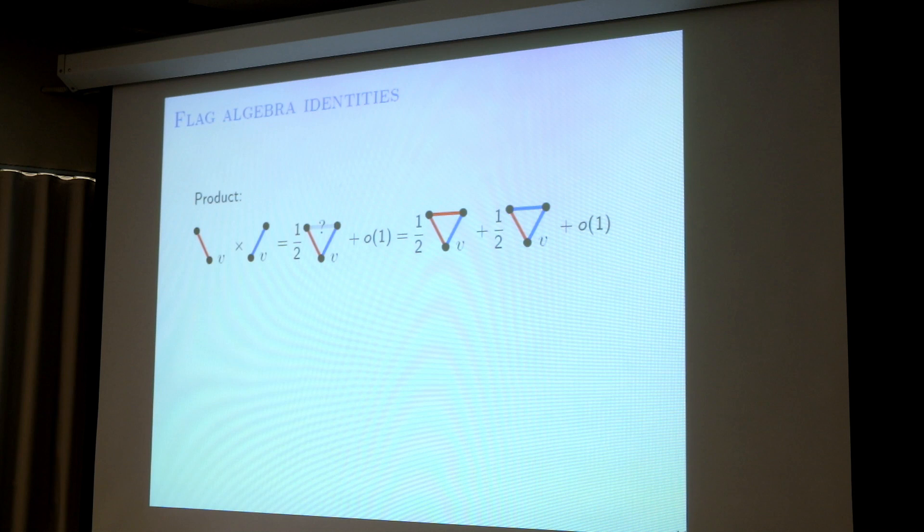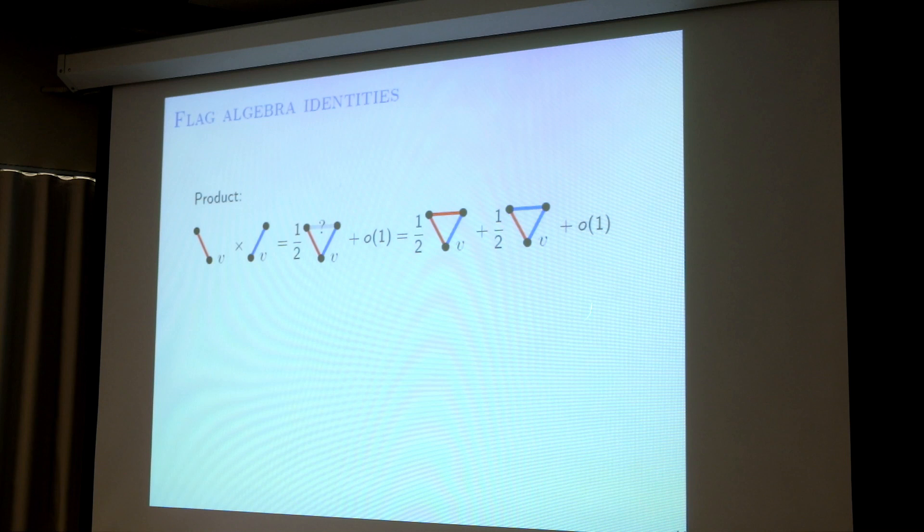Why is there a small difference? Because for example here I choose a vertex and then choose another vertex — there's a small chance you choose two vertices to be the same. But here I choose two different vertices. That's why there is a small difference.